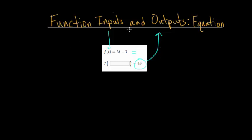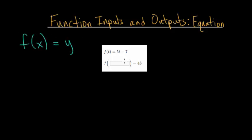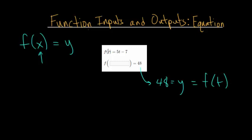For these question types we're not told what the input is — we're just given what the output is. If you remember, when you have a function it's equal to your y value. So usually you might have a function with the variable x, and this function is the y value. When you plug in different values of x, the function tells you the y value. In this case we're given the f(t) value and we need to figure out what the input is — what t value gives an output of 48.